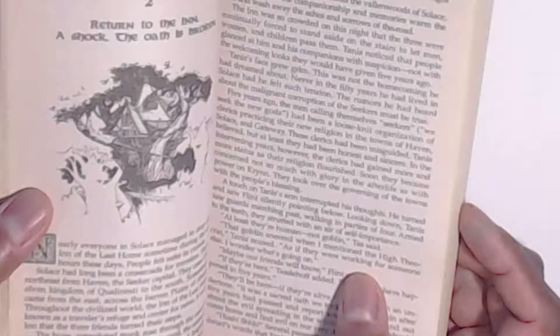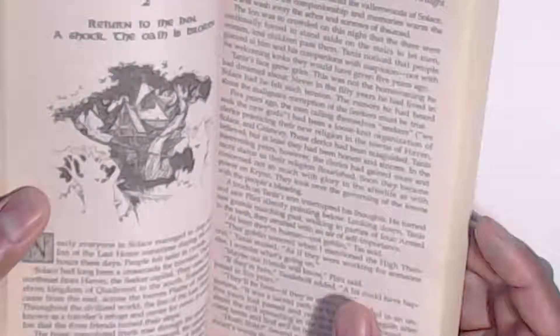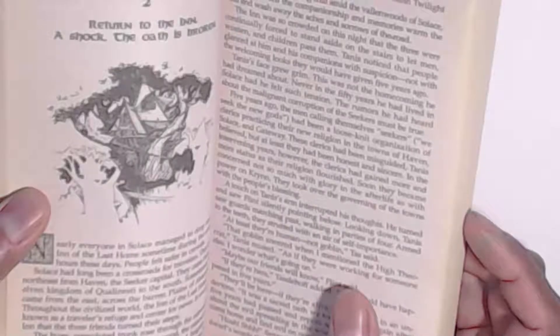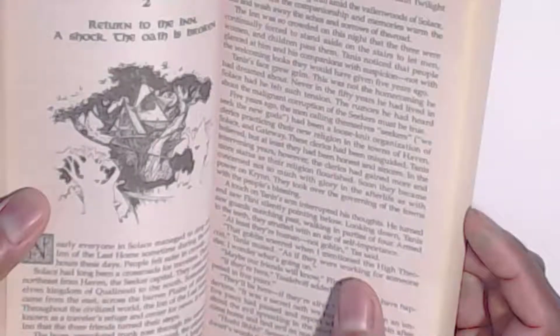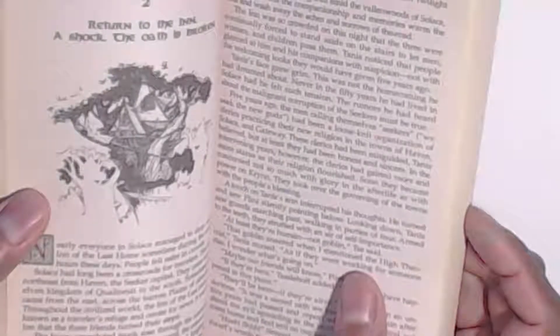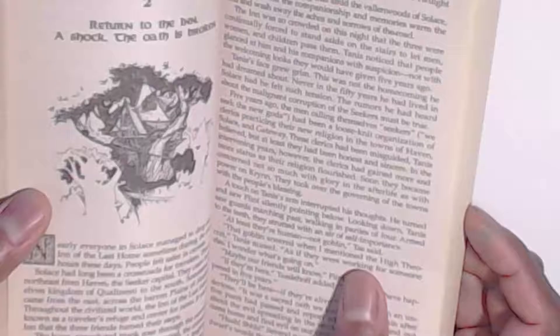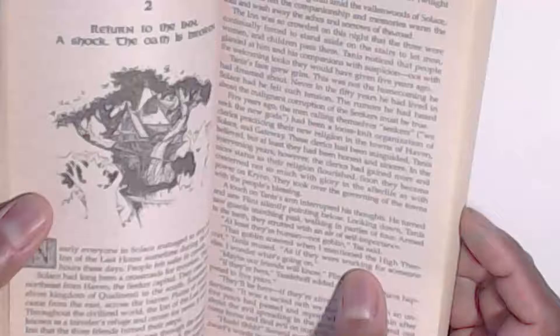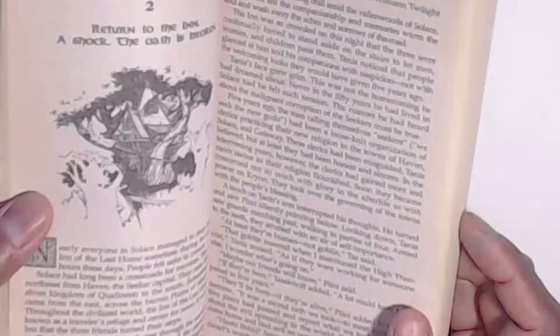A touch on Tanis' arm interrupted his thoughts. He turned and saw Flint silently pointing below. Looking down, Tanis saw guards marching past, walking in parties of four, armed to the teeth. They strutted with an air of self-importance. At least they're human, not goblins, Taz said. That goblin sneered when I mentioned the high theocrat, Tanis mused, as if they were working for someone else. I wonder what's going on. Maybe our friends will know, Flint said. If they're here, Tazalov added. A lot could have happened in five years.